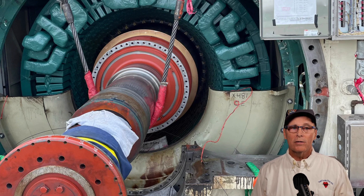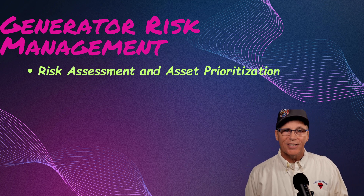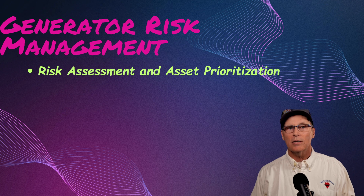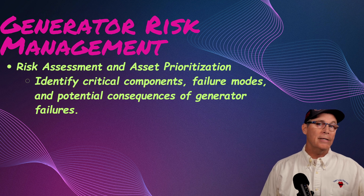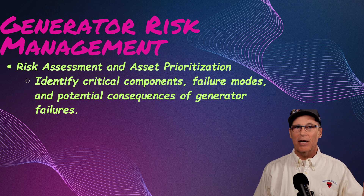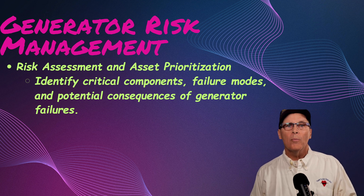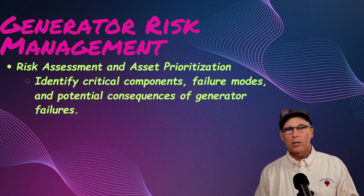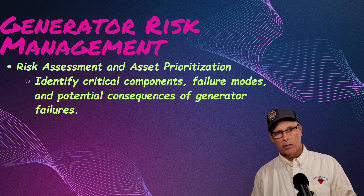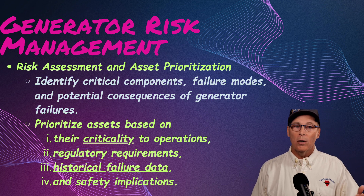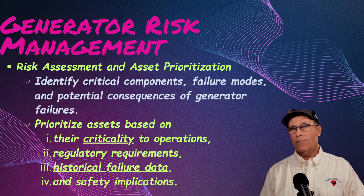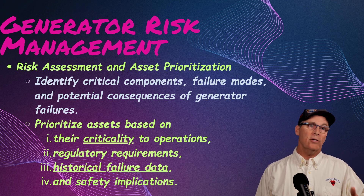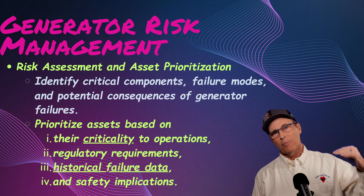Here's a close-up of a field getting ready to be pulled out of the stator. Now let's talk about managing the risks. We need to assess risks and prioritize assets — figure out which units are most important, which ones would shut down the entire plant. In a refinery or petrochemical facility, you may have redundant power generation or be able to rely on the grid for a while. Determine your most critical assets, then prioritize based on criticality, regulatory requirements, contractual obligations, and historical failure data. If a machine has known fleet issues elsewhere, that raises its priority.